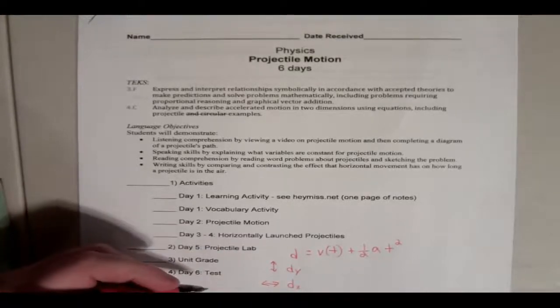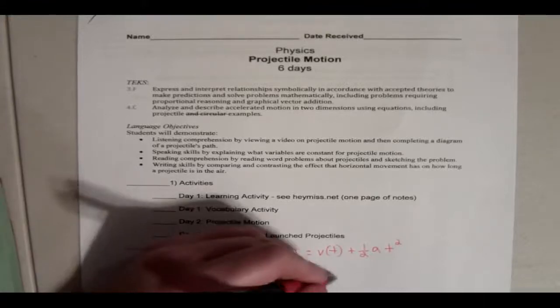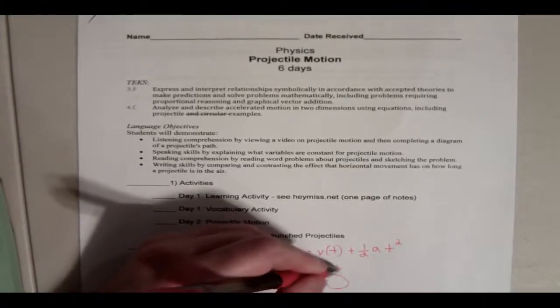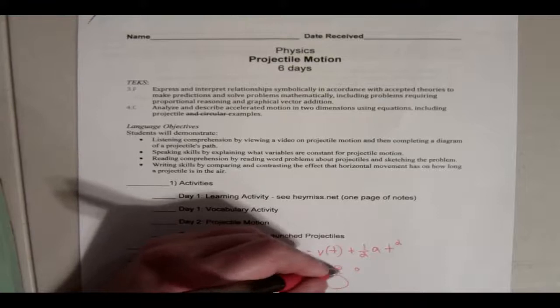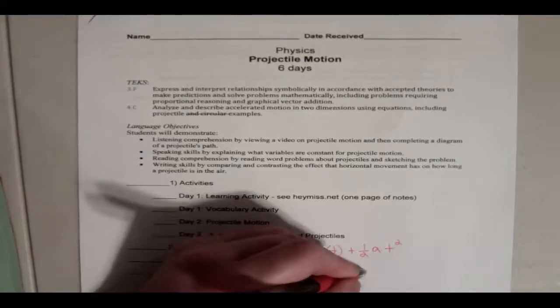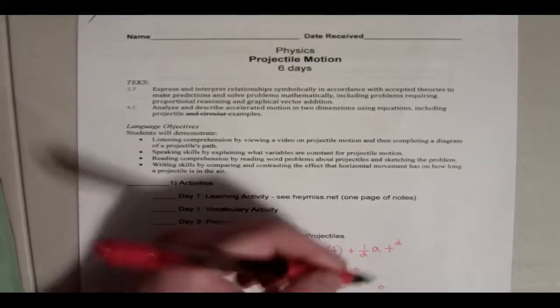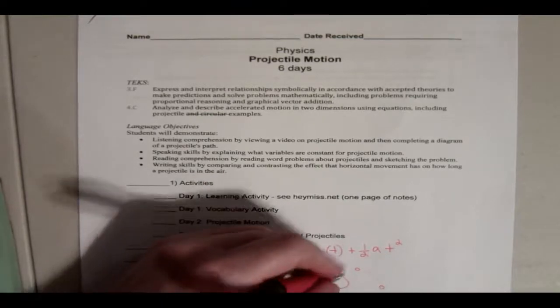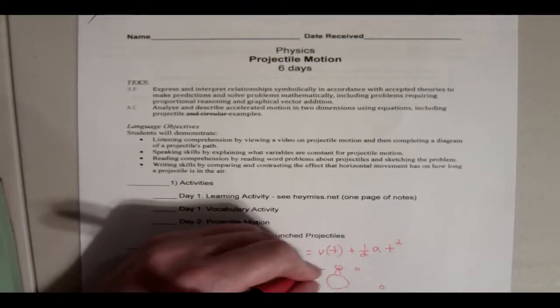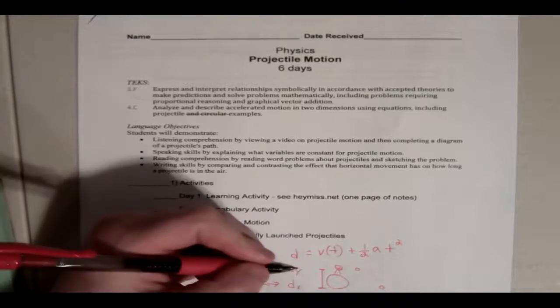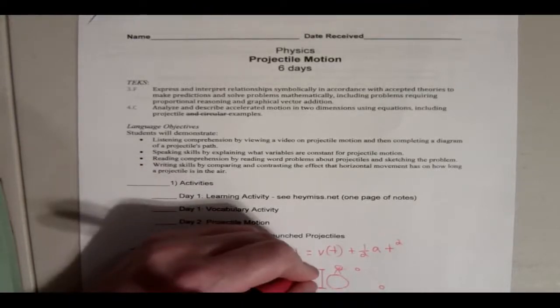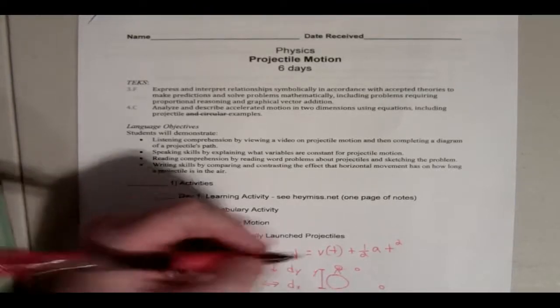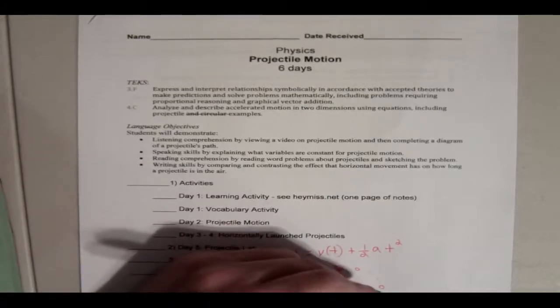So if we were to illustrate this, if I'm on a cliff and I throw a ball and the ball is going to go and it's going to hit the ground, there's two displacements here. There's a displacement from where I throw the cliff down. That's the y displacement. How far down did it go?